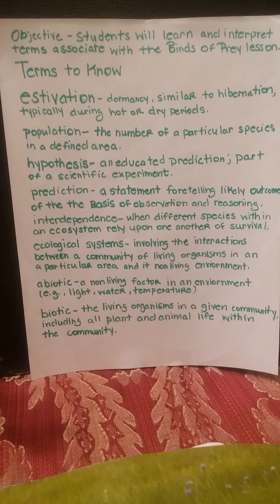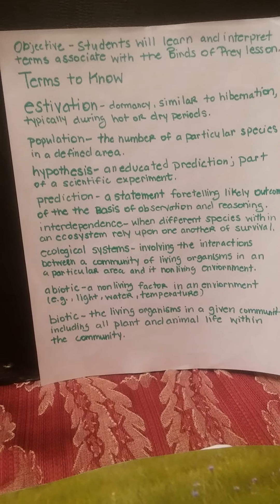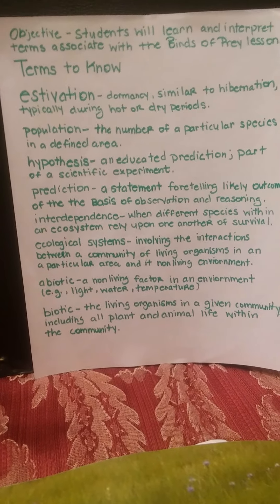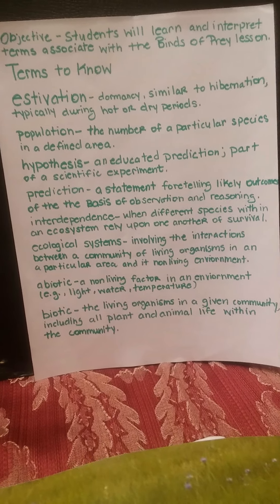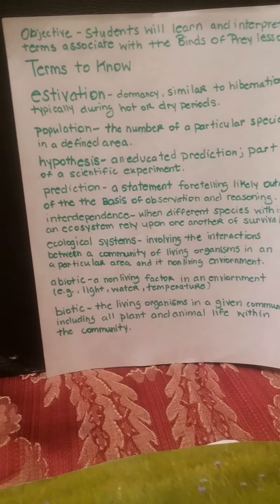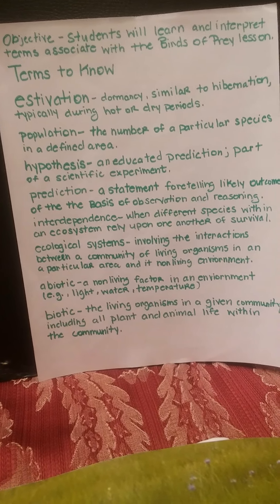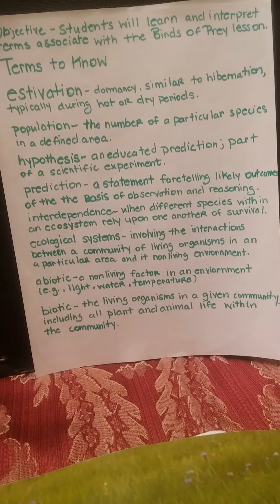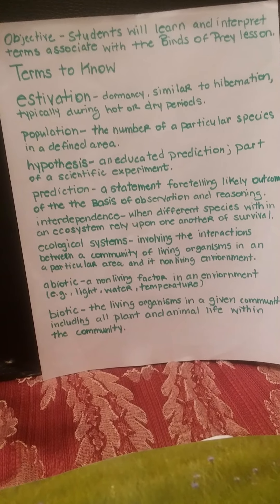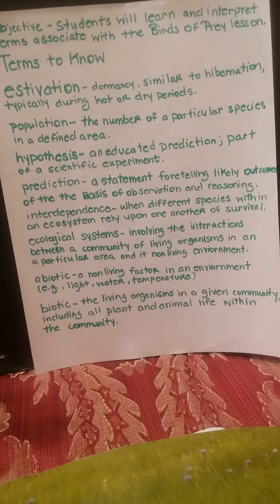The peregrine falcons relied on the squirrels for food, and because they couldn't get the food they needed to survive, they ended up migrating to other areas. Ecological systems involve the interactions between a community of living organisms in a particular area and its non-living environment. Temperature was a key issue — because of temperature, different animals moved, showing the interaction between the living community and the non-living environment.